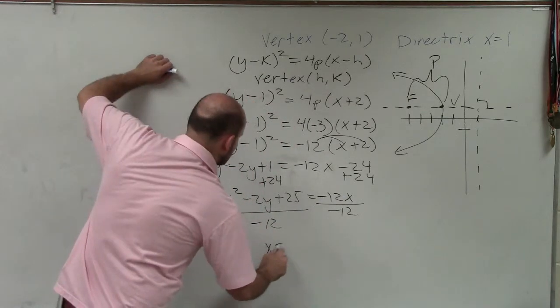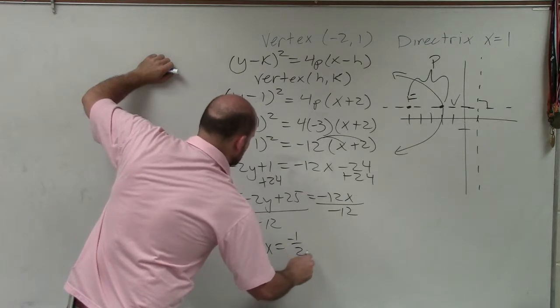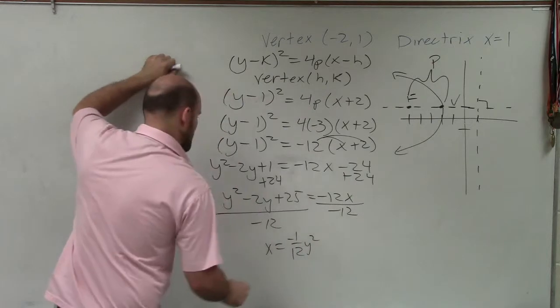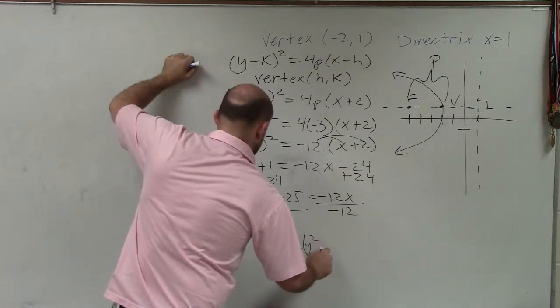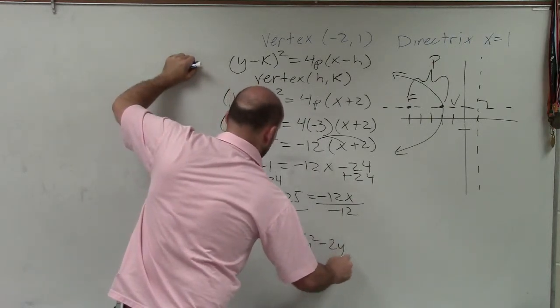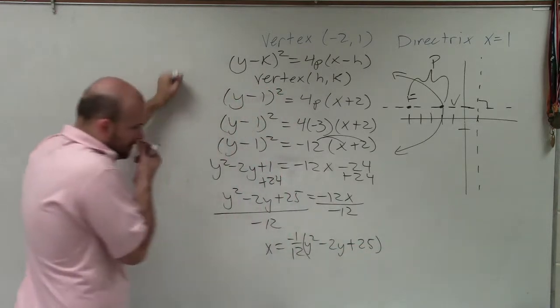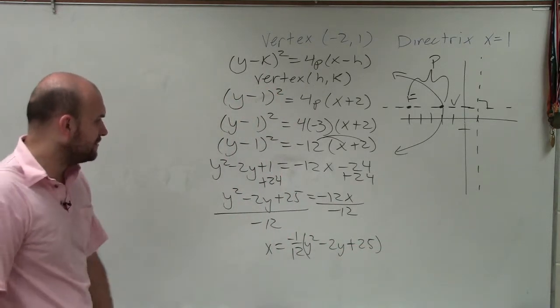And I get x equals negative 1 over 12th y squared minus 2y plus 25. I'm not going to distribute all the way through. I'll just leave that out in the front.